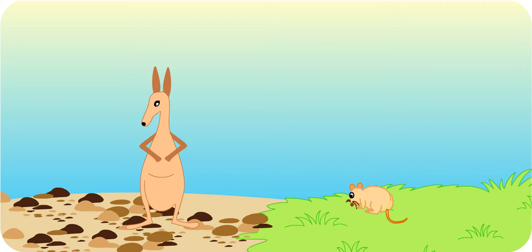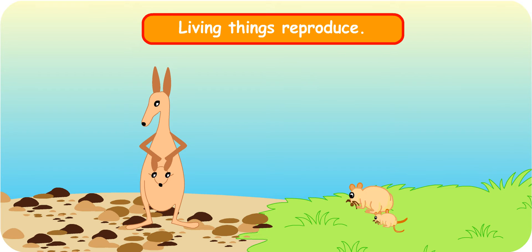And living things have young — they reproduce. Living things can do so many things which a non-living thing cannot do. Can you remember the things that a living thing can do?